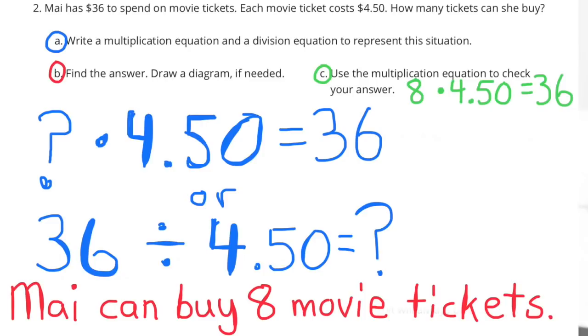A. Write a multiplication equation and a division equation to represent this situation. What number times $4.50 equals 36, or 36 divided by $4.50 equals what amount? Mai can buy 8 movie tickets.